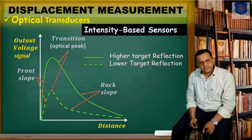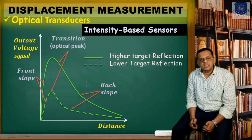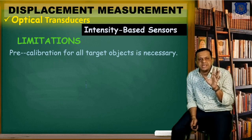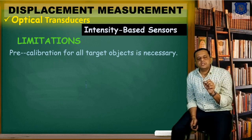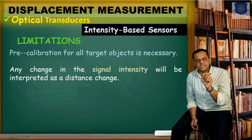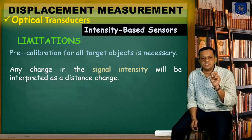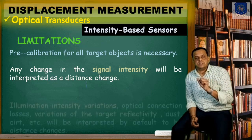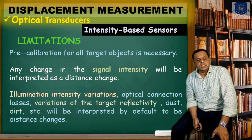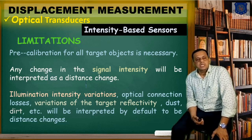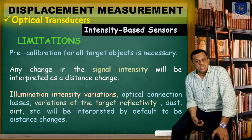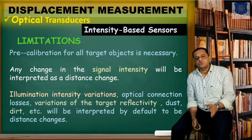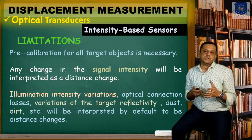The dashed line shows low target reflection and the green color shows higher target reflection. Now for limitations: calibration is required for all target objects, meaning for a specific object or target you need one dedicated system. Any change in signal intensity will be interpreted as a distance change, since this is an intensity-based sensor. Error sources include illumination variation, intensity variation, optical connector losses, variation of target reflectivity, dust, dirt, etc. — all of which cause errors in distance measurement. Based on these limitations, we must make a careful choice of sensor.